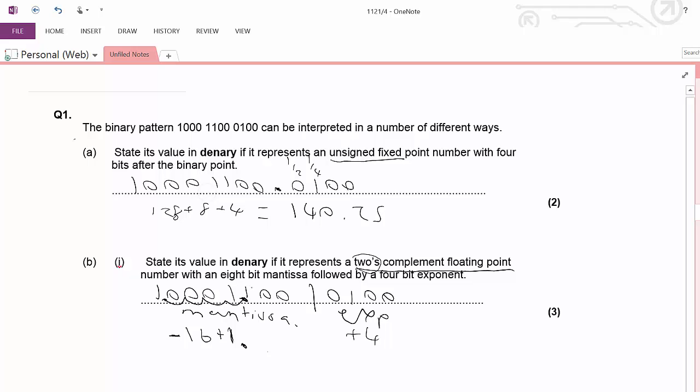Then after the binary point we had a 1 which gives us a value of 0.5. So we can add 0.5 to this. And that ends up then being 16 plus 1 minus 15 plus another half gives us an answer of minus 14.5.